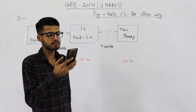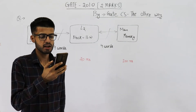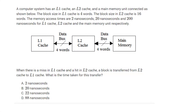A computer system has an L1 cache, an L2 cache, and a main memory unit connected as shown below. The block size in L1 cache is 4 words. The block size in L2 cache is 16 words. The main memory access times are 2 nanoseconds, 20 nanoseconds, and 200 nanoseconds for L1 cache, L2 cache, and the main memory unit respectively.